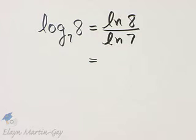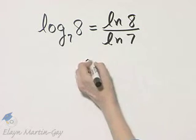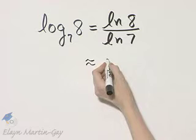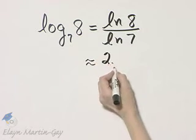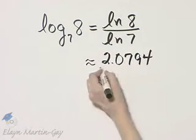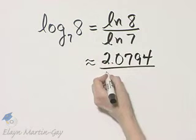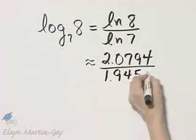Once you find each and divide, let me give you an approximation before the division. The natural log of 8 is approximately 2.0794, and the natural log of 7 is approximately 1.9459.